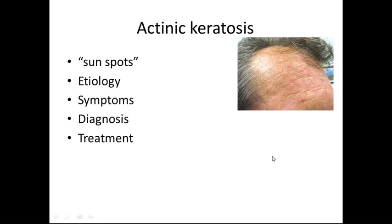Actinic keratosis, also called sunspots, is a slight darkening of the skin. The etiology is excessive sun exposure. Symptoms include growth of multiple wart-like lesions on sun-exposed areas. Diagnosis is by examination, and treatment can include Retin-A, curettage or scraping, or cryotherapy.